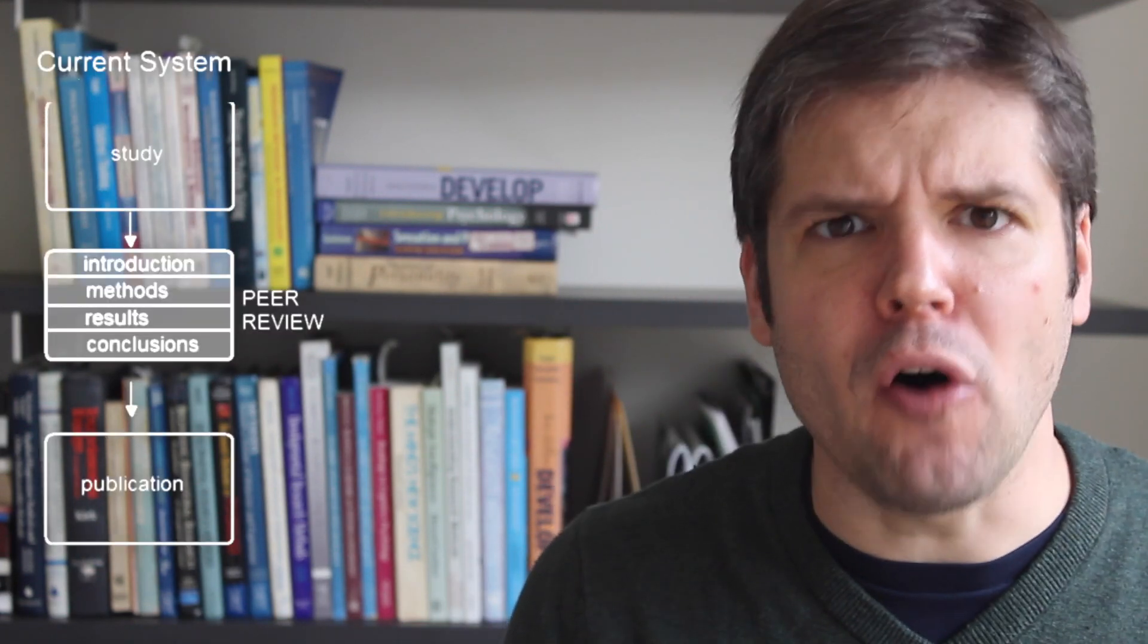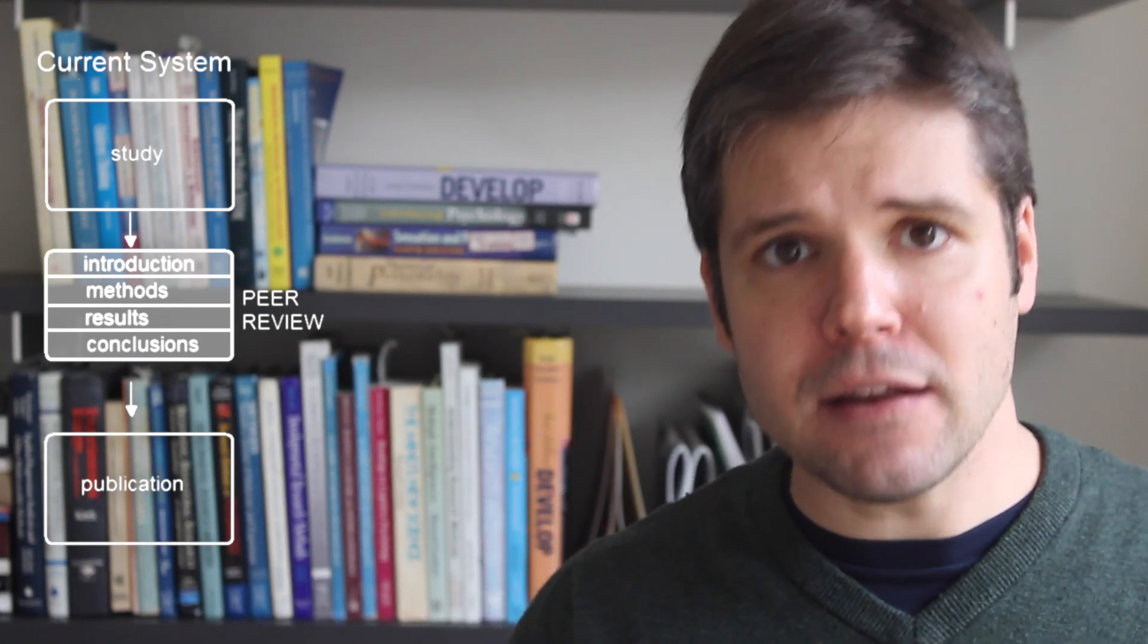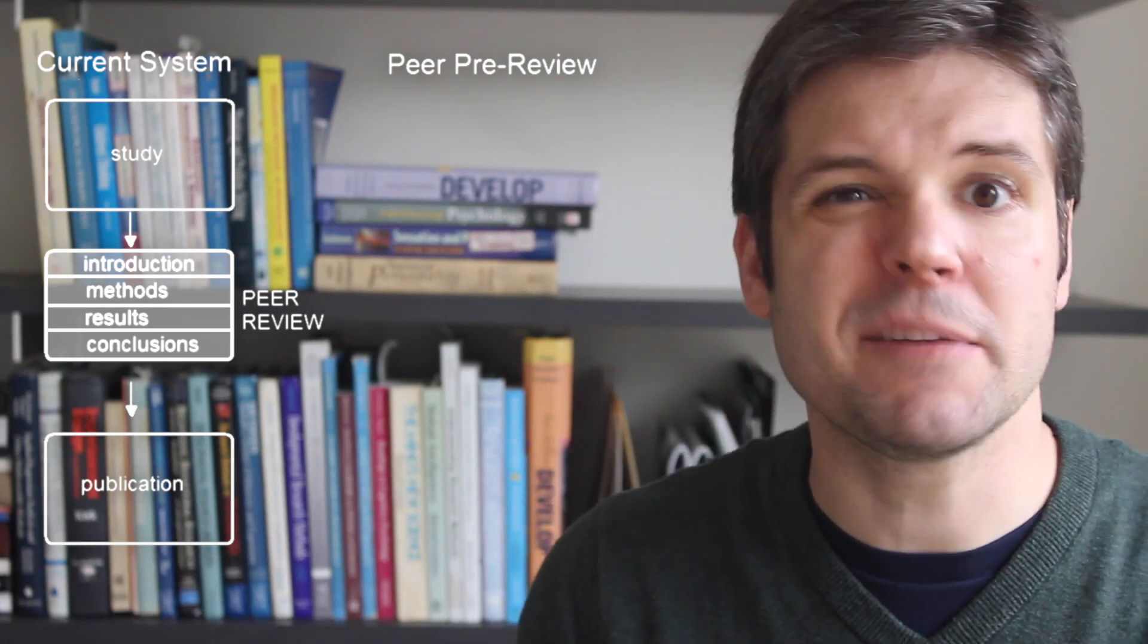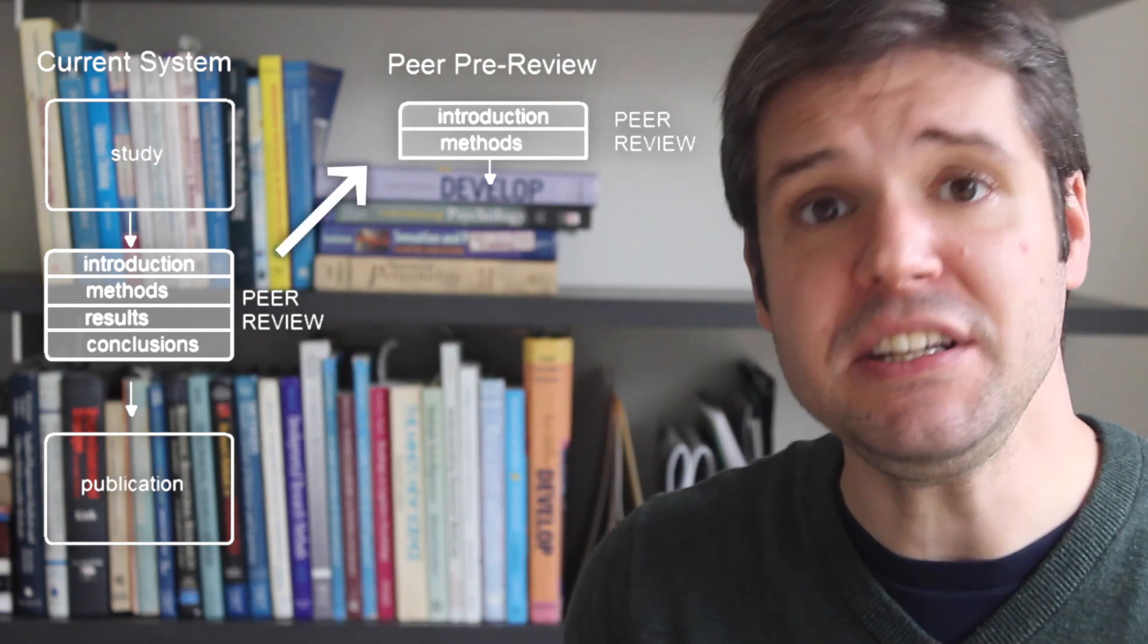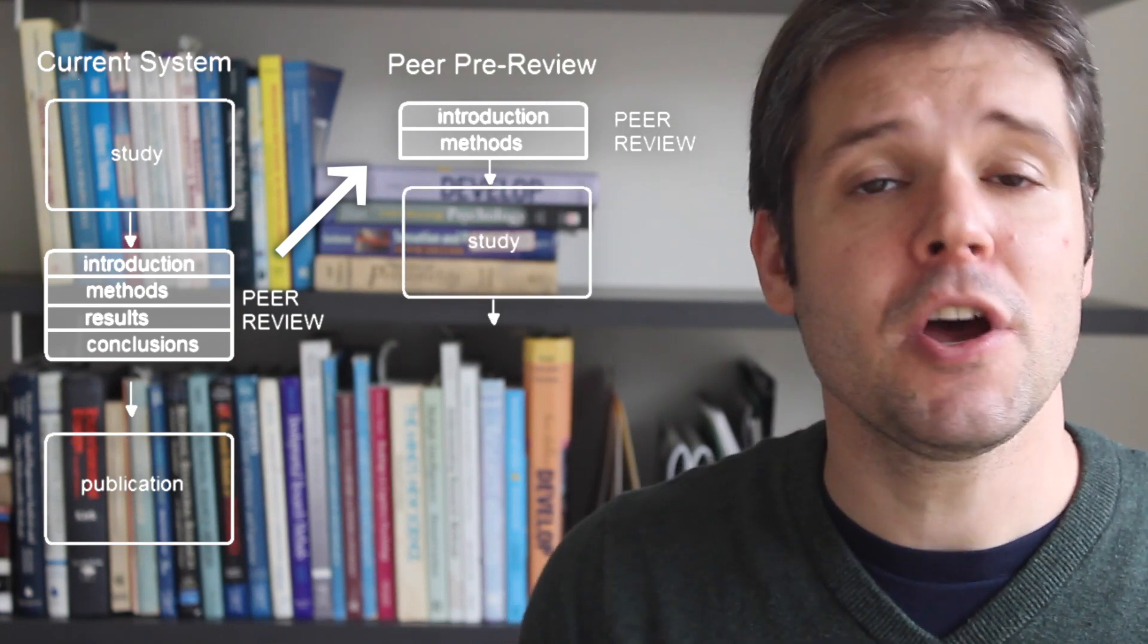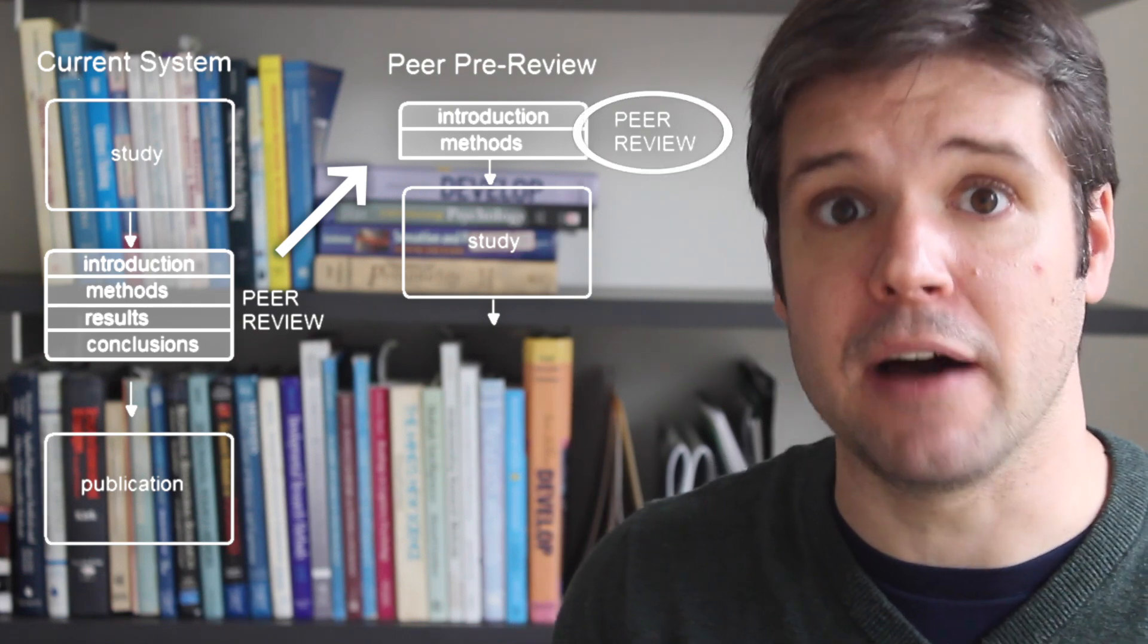A promising idea is to split the review process into two steps. Right now, people submit their research for publication after all the work is done. Hypotheses made, data collected and analyzed, and conclusions reached. Two-step review could require researchers to submit just their hypothesis and research methods, before doing the actual research. And then the decision to publish would just be based on whether the research question was interesting and their methods were sound.